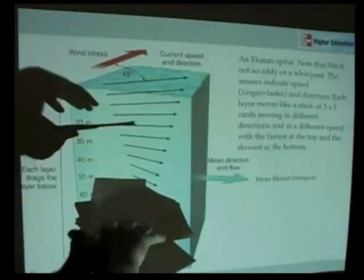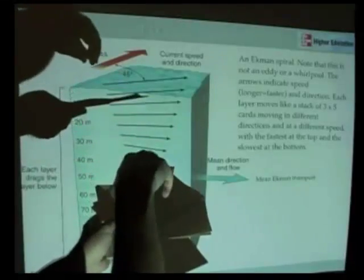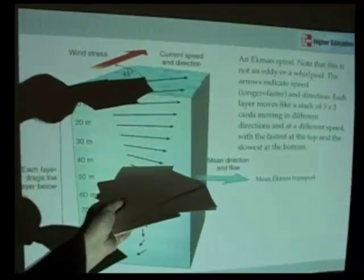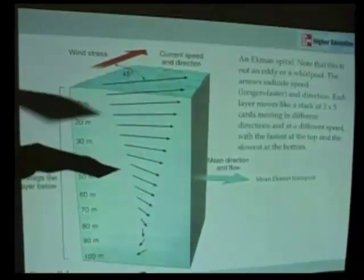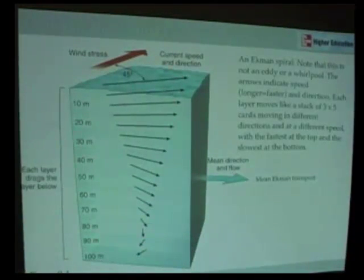And eventually moving in the opposite direction as you go from the surface down to these lower layers. This is moving that way, this is moving that way, and that's what's depicted in this diagram of the Ekman spiral.